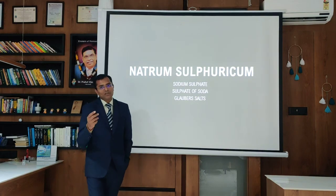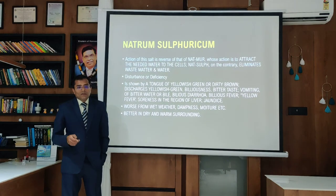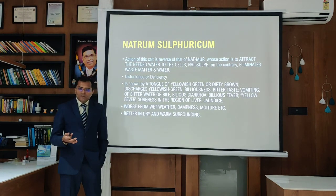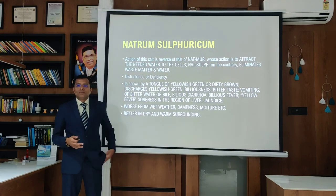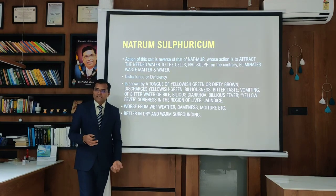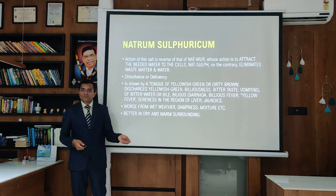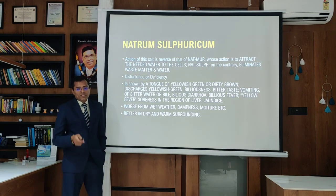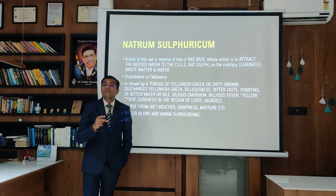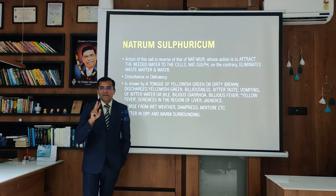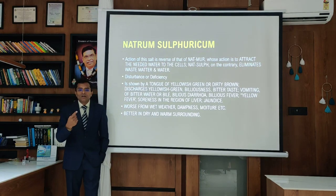Natrium Sulphuricum (sulphate of soda): the discharge is yellow-green. While Natrium Muriaticum attracts water needed for the cell, Natrium Sulphuricum on the contrary eliminates water and waste material from the body — it is the scavenger, removing toxic materials. When much toxic material accumulates in the body, think of Natrium Sulphuricum. The difference between Natrium Muriaticum and Natrium Sulphuricum: Natrium Muriaticum tongue is mapped or transparent-white, while Natrium Sulphuricum tongue is yellow — because Natrium Sulphuricum has affinity for the liver, which produces yellow coating on the tongue.